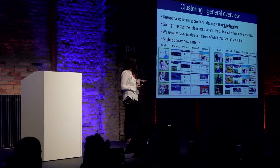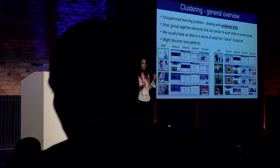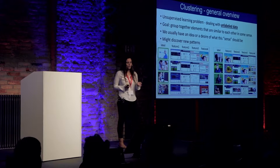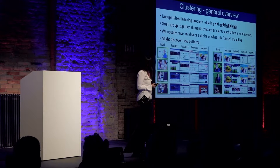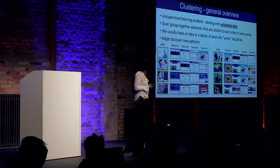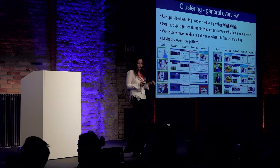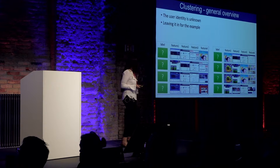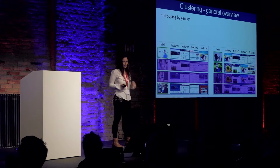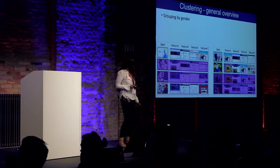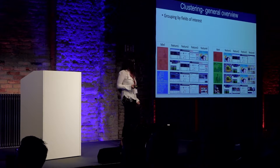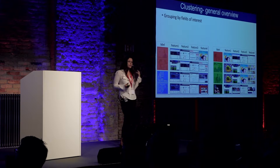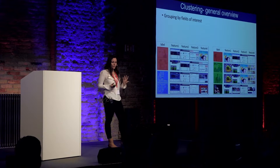Here's an example from the web industry. The elements are internet users and the features are the sites they visited. For example, here you have a male doctor who visited WebMD to read a medical article, another medical site, Amazon, and his child's school website. You also have a female doctor, two programmers — male and female — a scientist, and so on. Keep in mind this is an unsupervised learning problem; the user identity is unknown. A possible desire would be to group the users by gender, but given these features, we are more likely to group users by their fields of interest. Our ability to distinguish between elements is strongly dependent on the feature space.